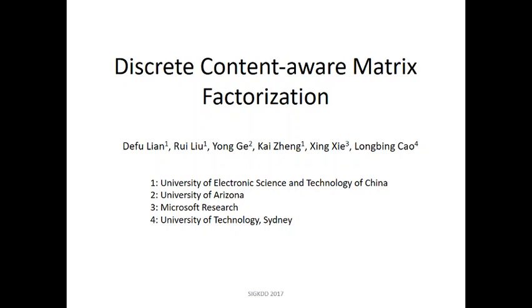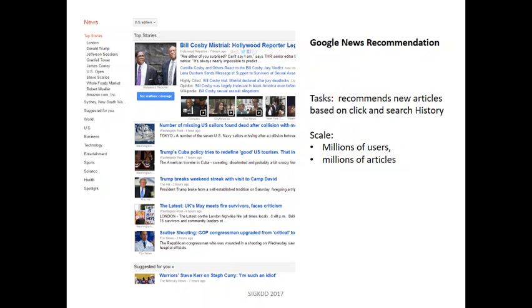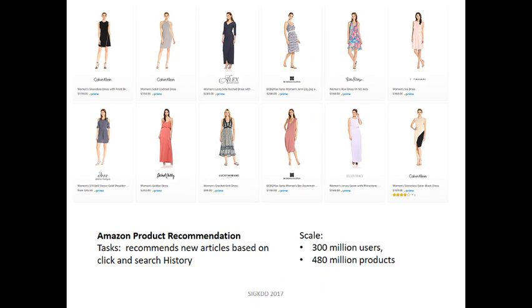This video shows the basic motivation and significance of our recent work published in SIG-KDD 2017. Recommender system is an effective means of helping people filter important information. For example, Google News recommender systems must choose individual personalized articles for millions of articles based on their click and search history. Amazon needs to recommend products tailored for user tastes for more than 480 million products.